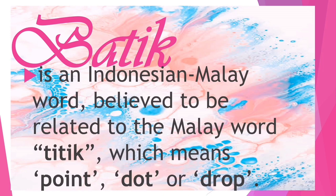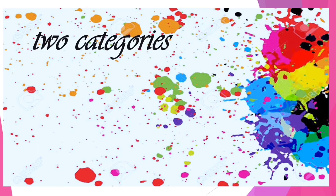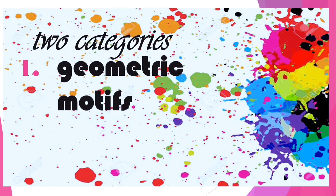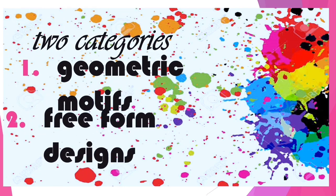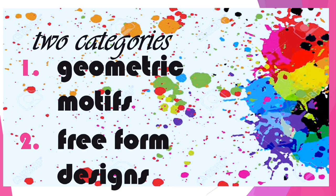Next are Indonesia, Malaysia, and Singapore. These three countries share the common textile called batik. Batik is an Indonesian-Malay word believed to be related to the Malay word 'titik,' which means point, dot, or drop. It has two categories: geometric motifs, which use different shapes, and freeform designs, which have no restrictions — you are free to design anything you want.